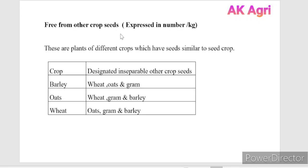Seeds should be free from other crop seeds. Other crop seeds are plants of different crops whose seeds are similar to the seed crop. For example, in the case of wheat, the other crop seeds are oat, gram, and barley. Once these crop seeds are mixed with wheat, it is difficult to separate them because of their similar shape, size, and color.